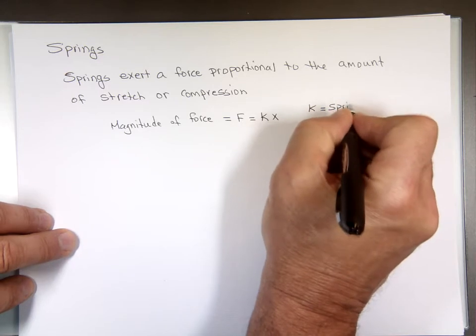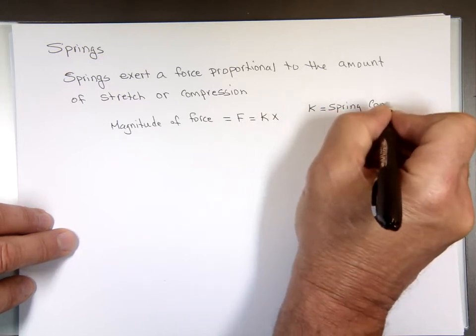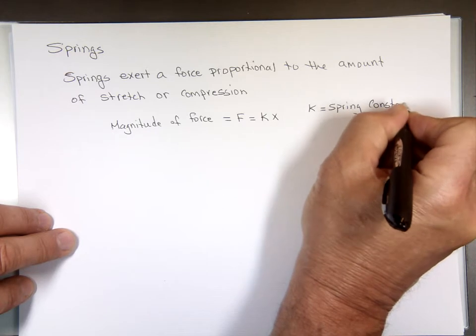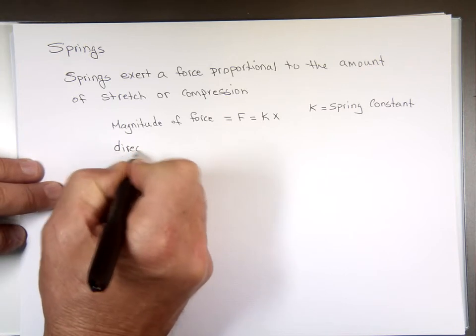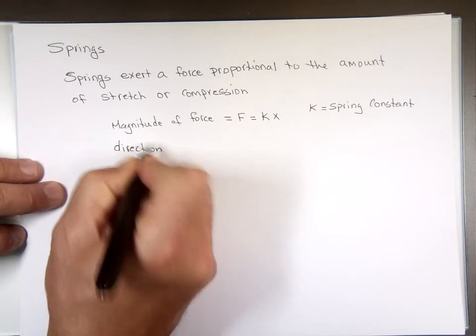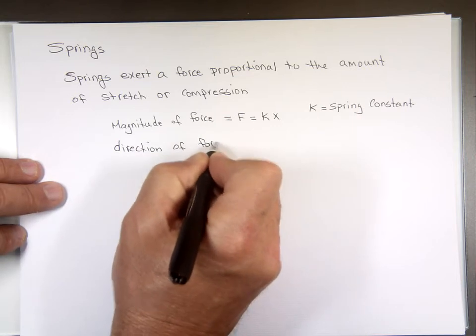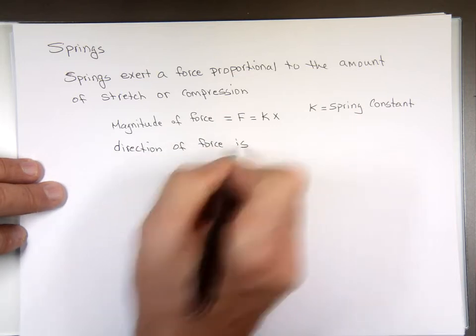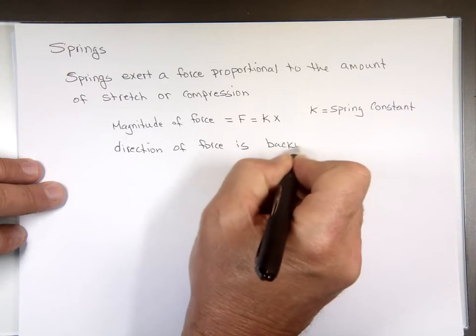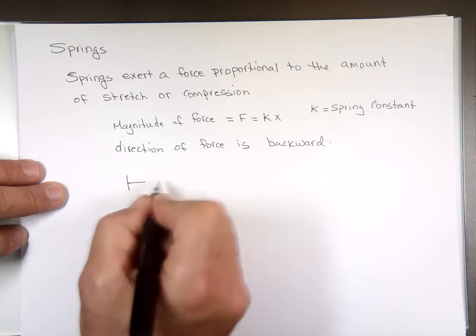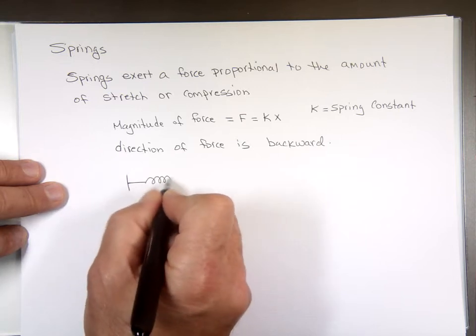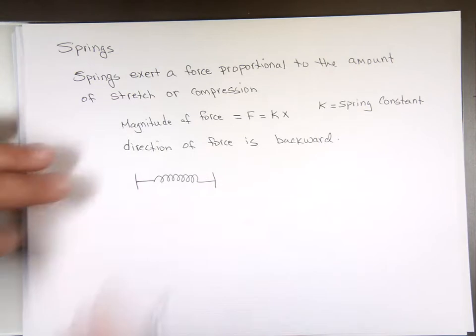We'll tell you how you find that. Now the direction of the force is always what? Backward. What does that mean backward? If you take a spring, not a string, if you take a spring and you just lay it down not doing anything to it, it's gonna reach that distance.